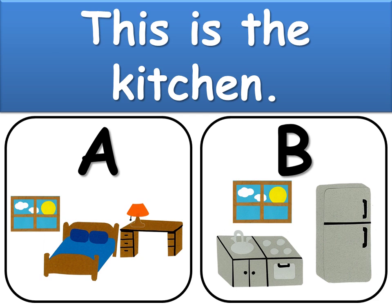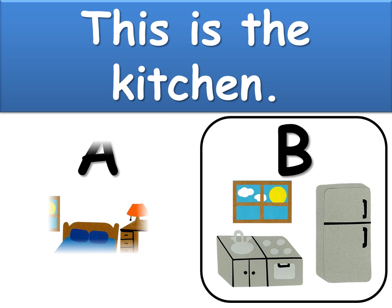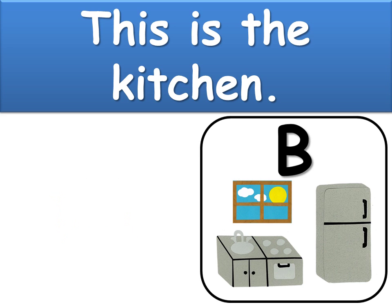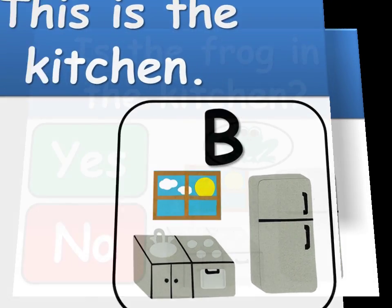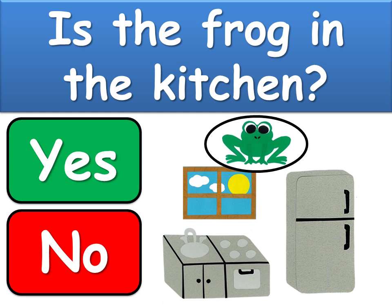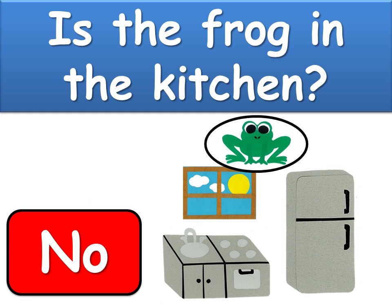This is the kitchen. Which picture shows us the kitchen — is it A or B? The answer is B. B is the kitchen. Can you remember: is the frog in the kitchen, yes or no? The answer is no — the frog isn't in the kitchen.